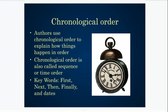Let's look at chronological order first. Authors are going to use chronological order if they want to explain how things will happen in a specific order. Sometimes this can be called sequence, sometimes you might see it called time order. You will know if it's in chronological order because you will see special words like first, next, then, finally. You'll also see lots of dates. When you see dates and keywords like first, next, after, finally, before, you will know this was written in a special sequence.